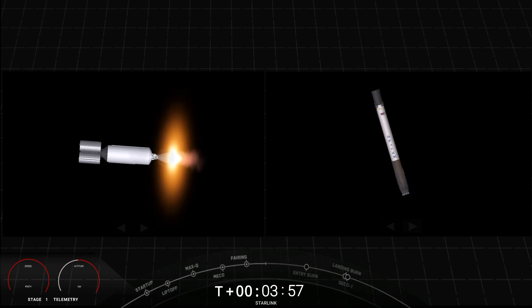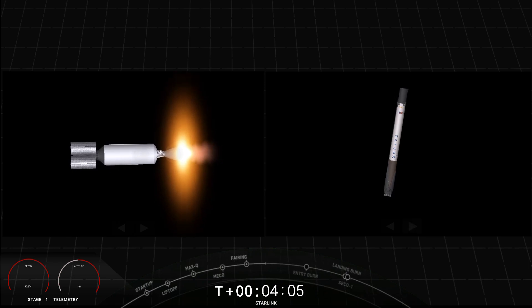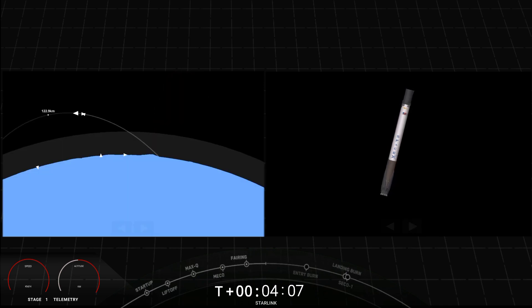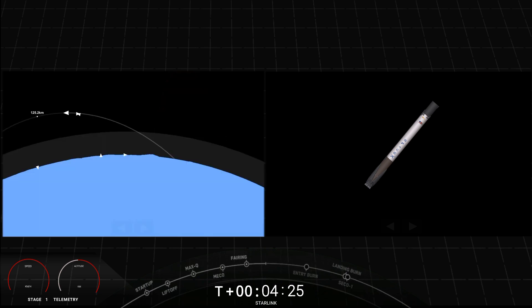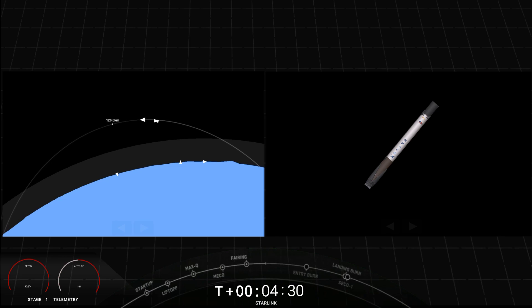These are live views. In order for the first stage to make its way back to our drone ship we need to execute two burns. The first is an entry burn where three of the engines on the first stage will reignite and this will help to slow down the stage as it re-enters the upper parts of the atmosphere. The second burn for the first stage is the landing burn. This is a single engine burn that will bring the vehicle speed down rapidly in order to land on our drone ship. A few minutes away from those entry and landing burns. For now we're enjoying some great views of both stages.